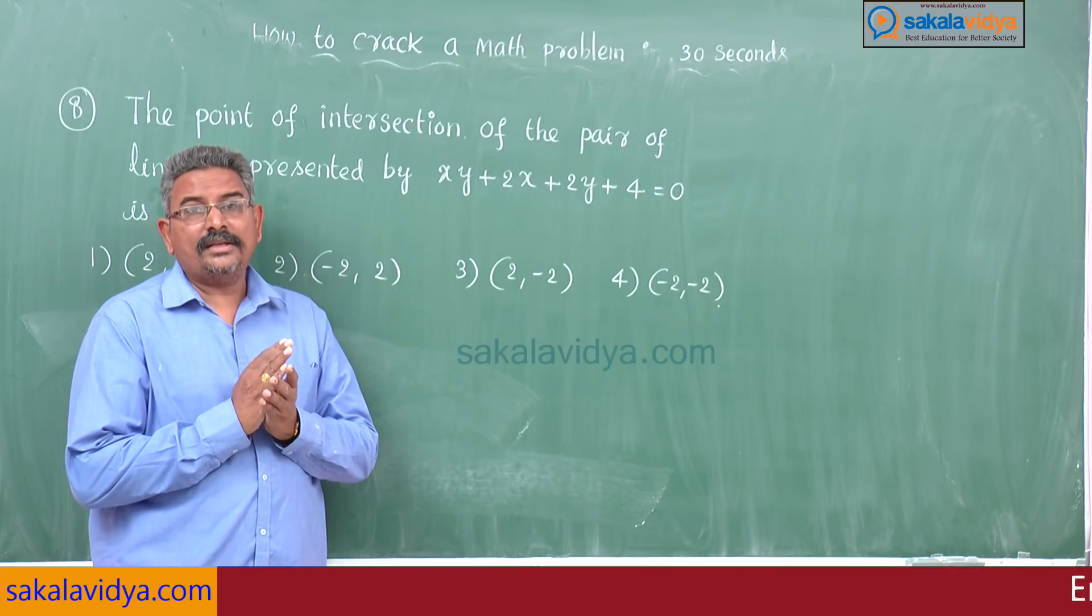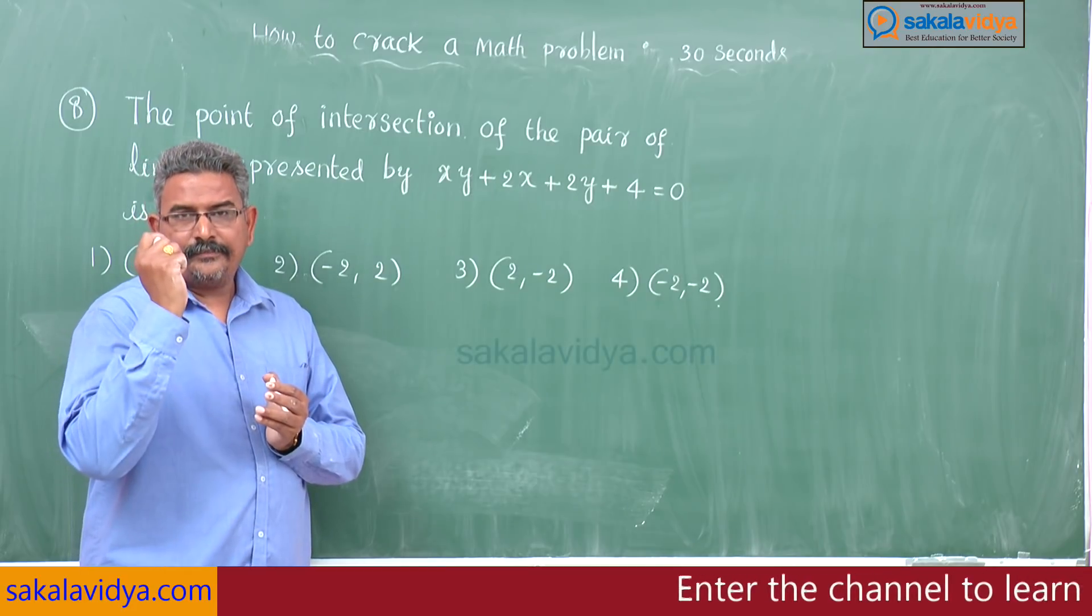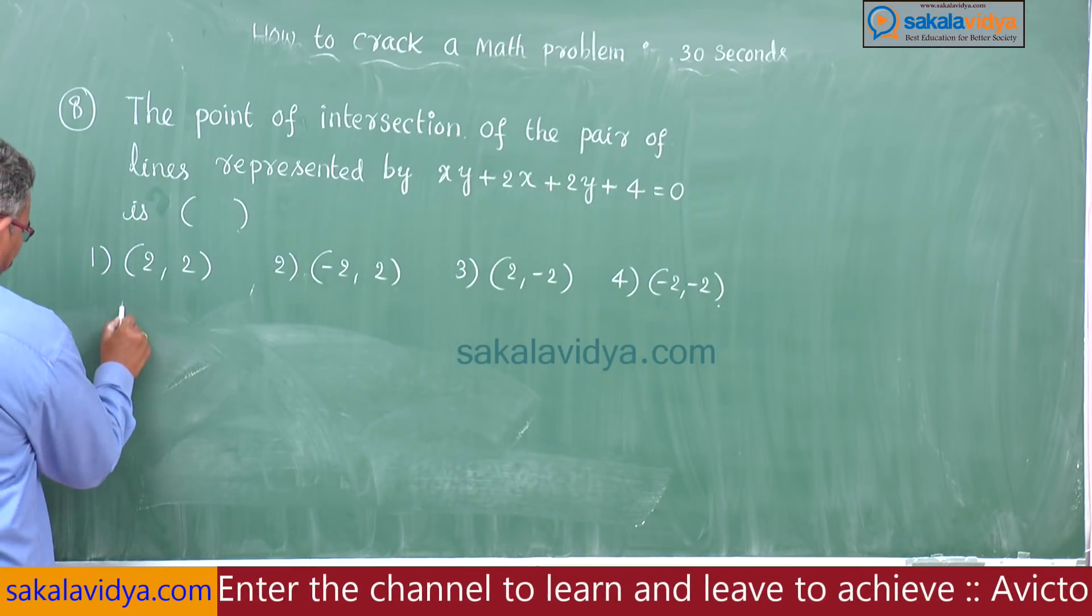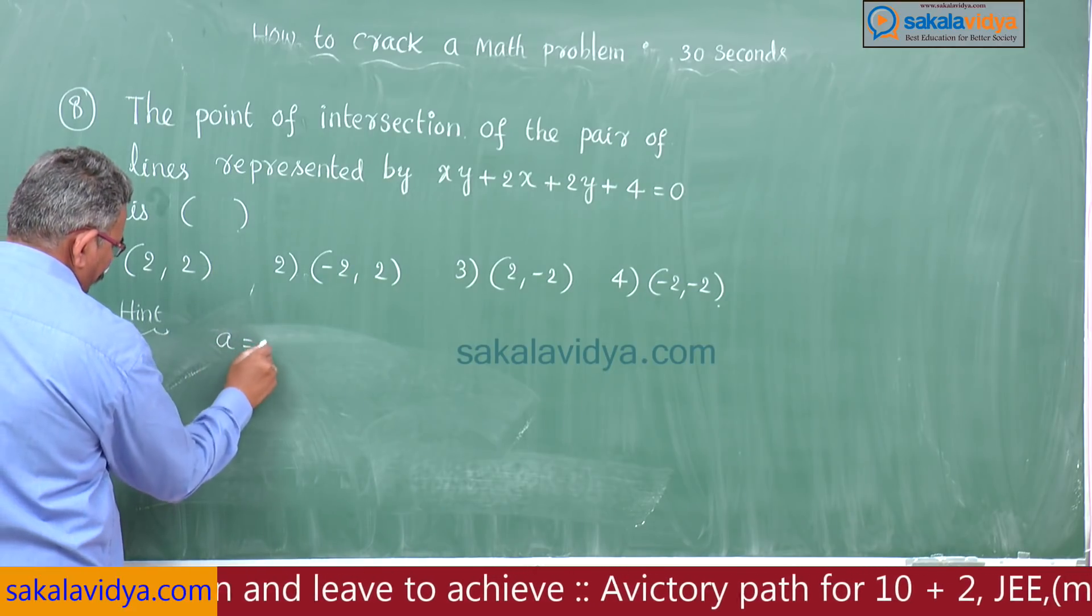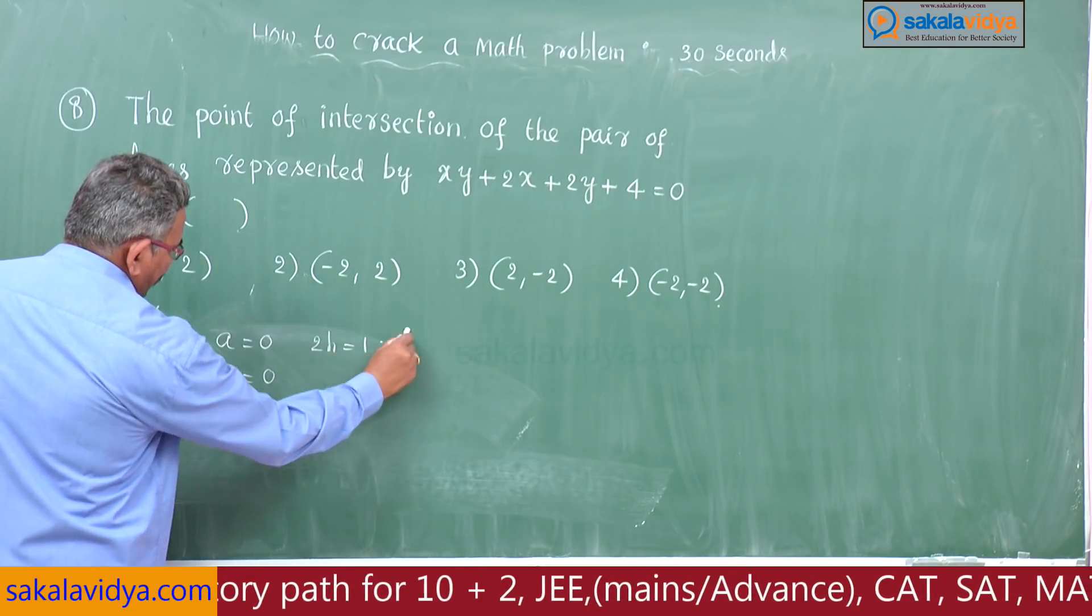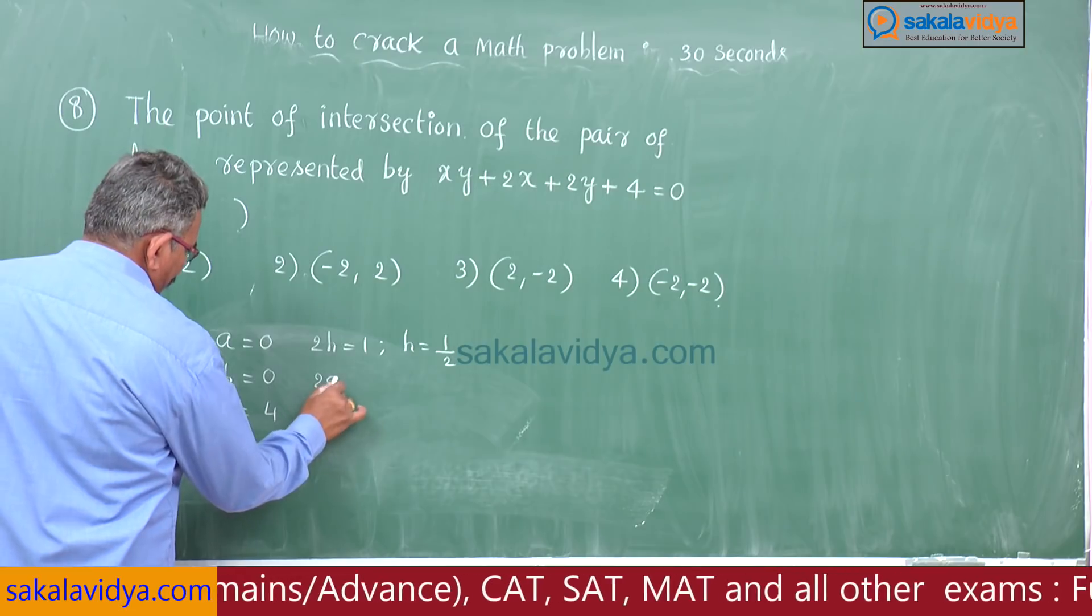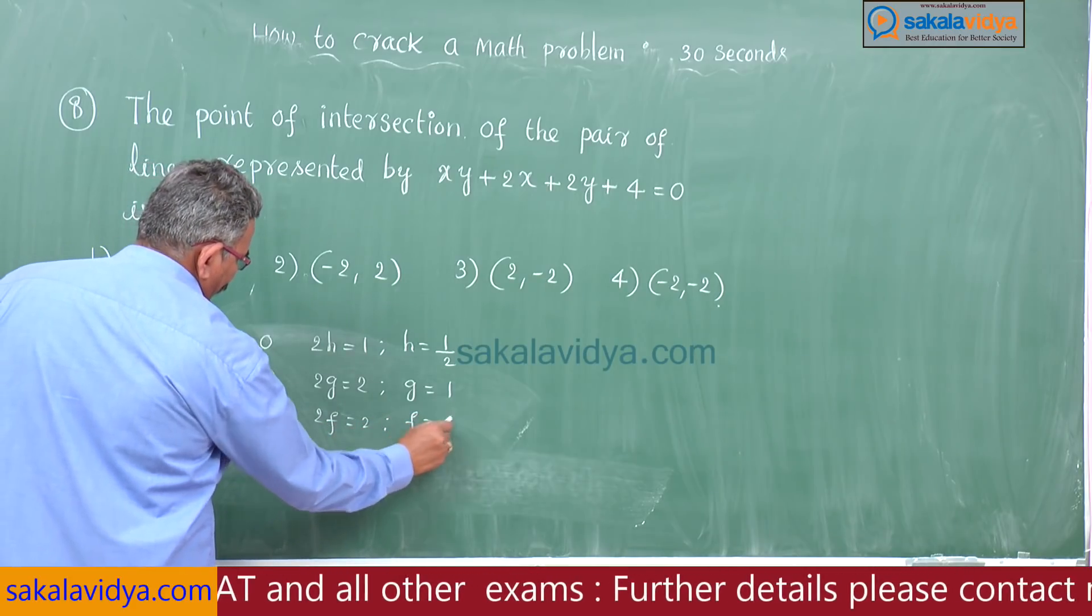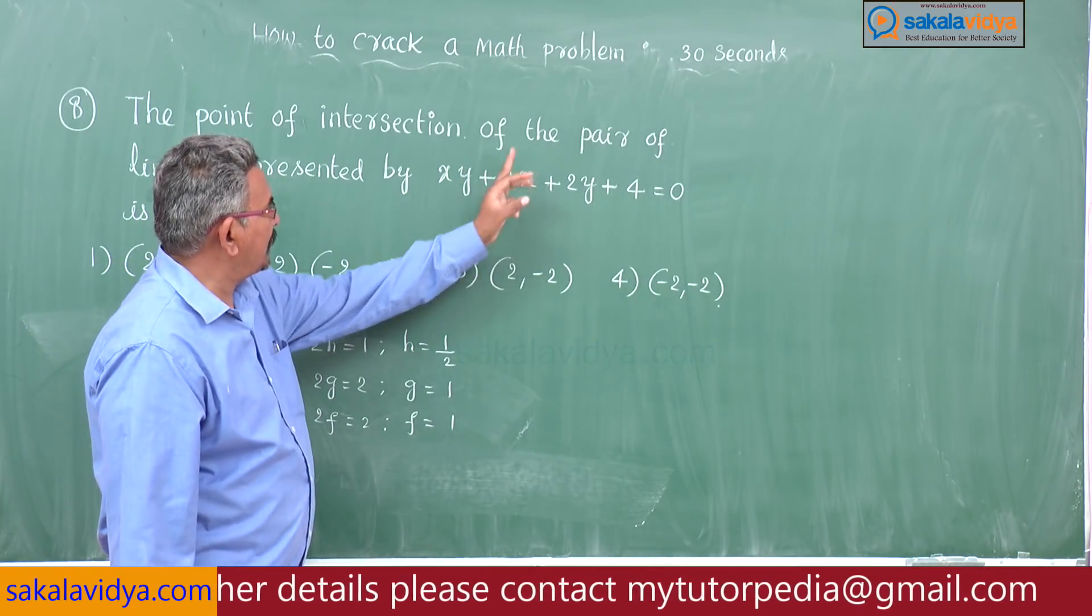This problem can be done in three ways: formula method, factorization method, and shortcut method. Let us do first formula method. Here a is 0, b is 0, constant coefficient c is 4, 2h is 1 so h is 1/2, 2g is x coefficient so 2g is 2 meaning g is 1, 2f is 2 meaning f is 1.